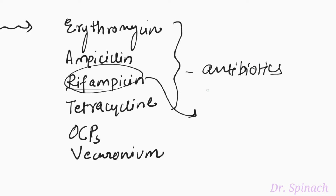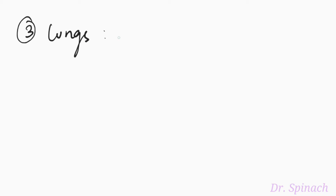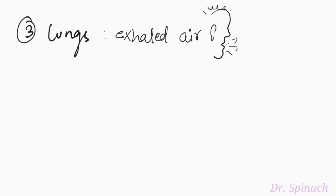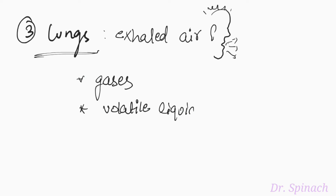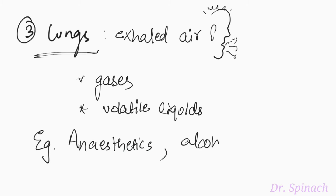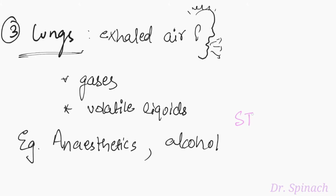Rifampicin is selectively used to treat tuberculosis. The third way drugs are excreted is via lungs as exhaled air. These drugs should be in the form of gases or highly volatile liquids. The examples include general anesthetics and alcohol.